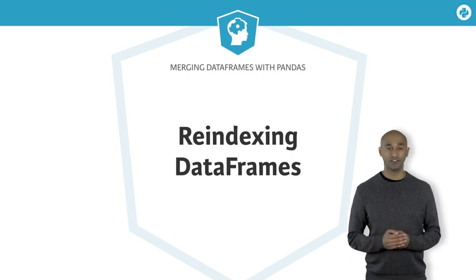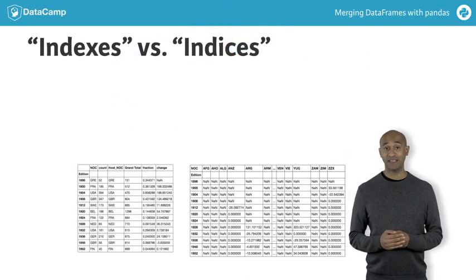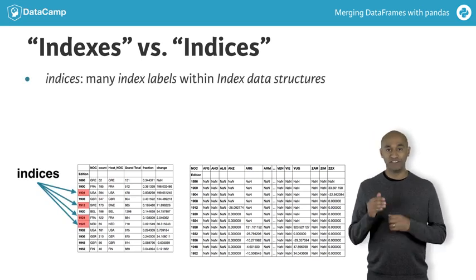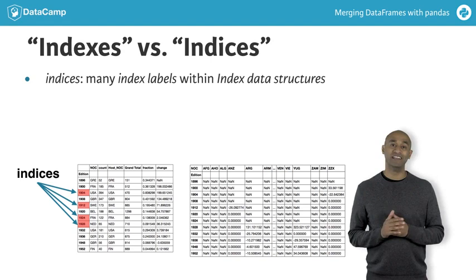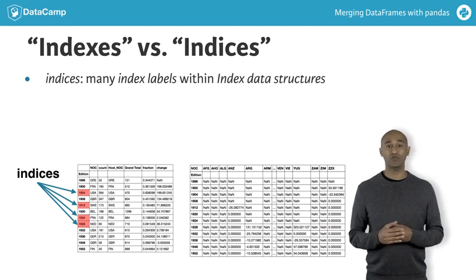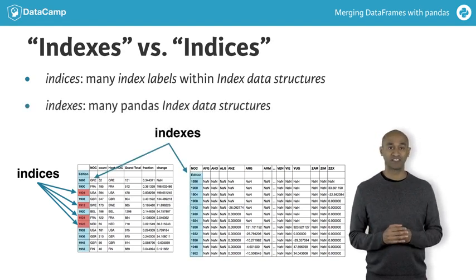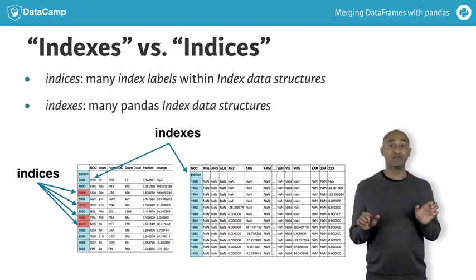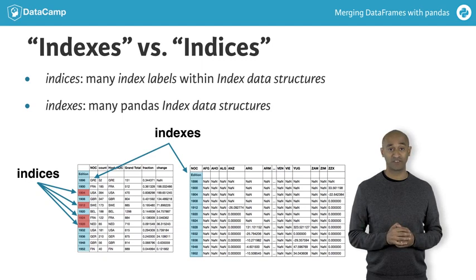Let's make a brief note on terminology. The plural of index in English can be indexes or indices — both are acceptable usage. Let's adopt the convention of using indices as the plural of index when referring to individual labels within an index data structure, and indexes as the plural when referring to many index data structures associated with several pandas Series or DataFrames.